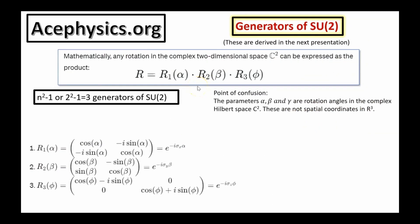SU2 has three generators because n²−1 equals 3 when n equals 2. These three 2-by-2 matrices are the generators of the group SU2, and these matrices can be written as an exponential of another matrix. Any unitary 2-by-2 matrix, or generalized rotation matrix R, can be created by a combination of the group generators R1, R2, and R3.